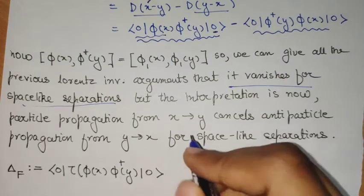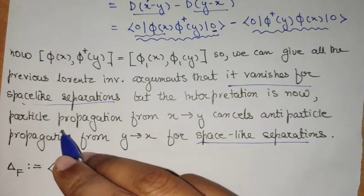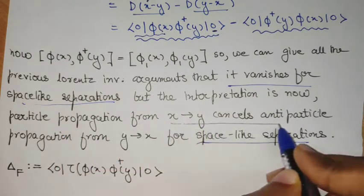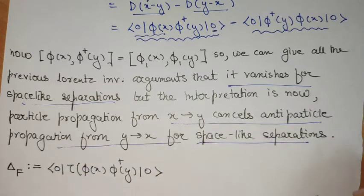So we see, for space-like separations, the particle propagation from x to y cancels the anti-particle propagation from y to x.